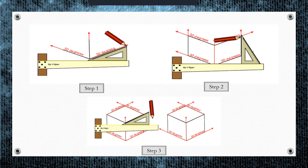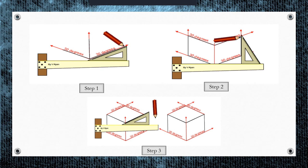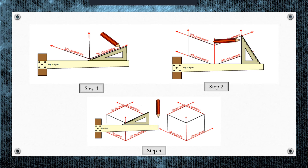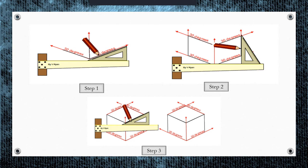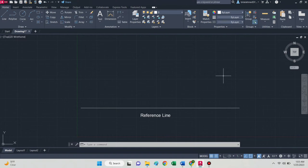In step 1, we have a T-square and a 30-60 degree set square. First of all, you will draw a reference line, then mark any point on the reference line and start drawing a line at 30 degrees from it. This is the vertical line, and again this line is at 30 degrees from the reference line. In step 2, you will draw two vertical lines, and in step 3 you will draw two lines at 30 degrees. This is how you draw an isometric drawing.